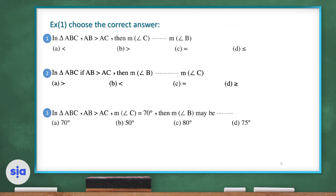Exercise number one — choose the correct answer. Question 1: In triangle ABC, if AB is greater than AC, then the major angle — the measure of angle C is greater than the measure of angle B. Question 2: In triangle ABC, if AB is greater than AC, then angle B is less than angle C.